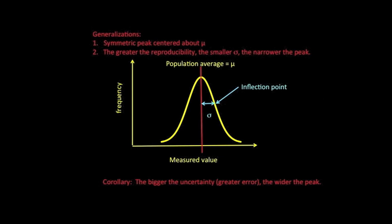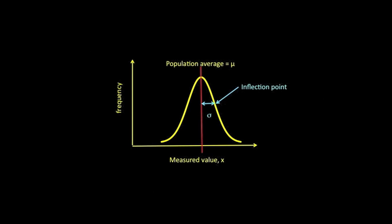We note that the peak is symmetric about the population average, and the better the reproducibility, the skinnier the peak. Expressed another way, the greater the standard deviation or the uncertainty, the wider the peak.